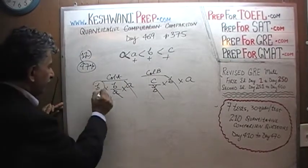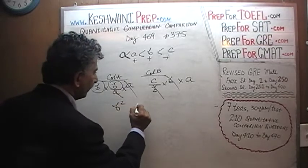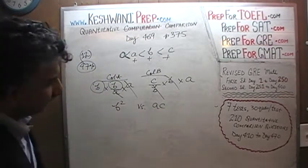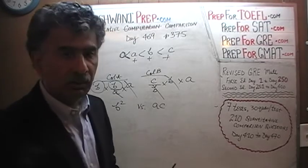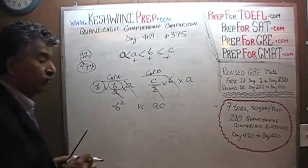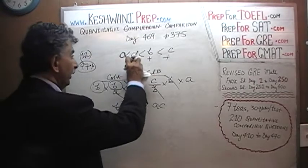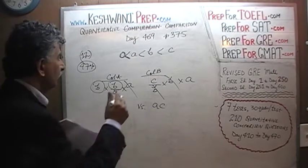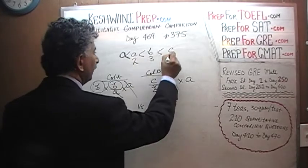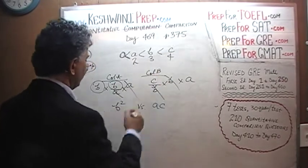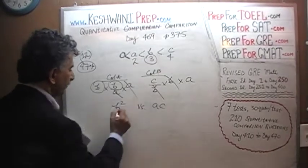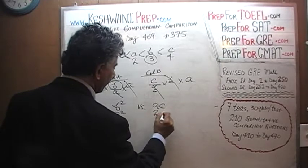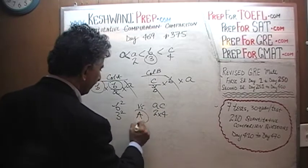What we end up with is B times B, which is B squared, versus A times C. One thing most people are going to do is simply plug in numbers. How about 2, 3, and 4? B squared is going to be 9, and A times C is 2 times 4, which is 8. In this case, the answer appears to be A.